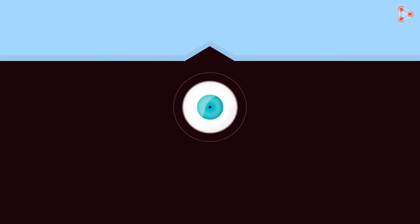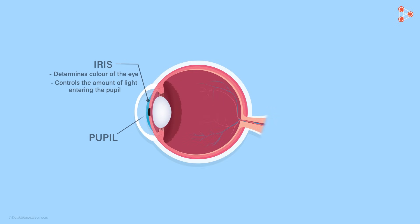And when there is less light, it expands allowing more light to enter through the pupil. What happens next?